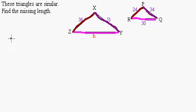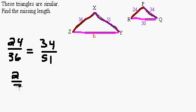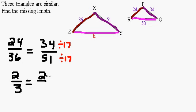So we can say 24 is to 36 as 34 is to 51. Let's check: 24 over 36 — divide both by 12 — gives 2 over 3. How about 34 over 51? 17 goes into both: 34 divided by 17 is 2, and 51 divided by 17 is 3. So we also get two thirds. Basically, the small triangle is two thirds as big as the large triangle.